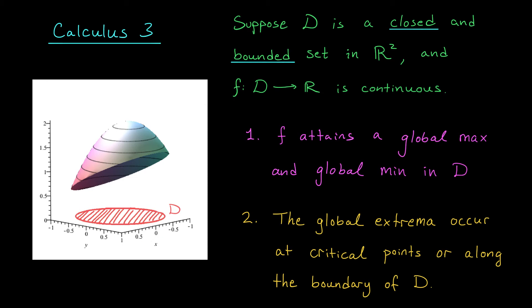We also have a version of the closed interval method that tells us where to look for these global maxes and mins. It says that the global extrema will occur either at critical points or along the boundary, just like we had back in Calc 1.